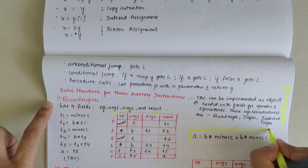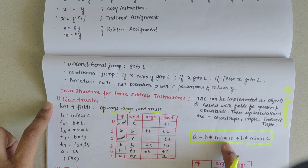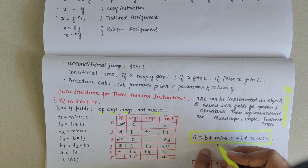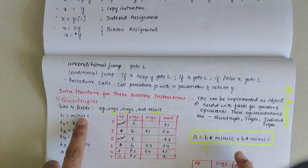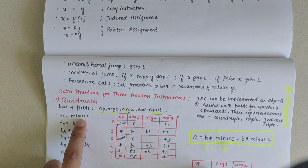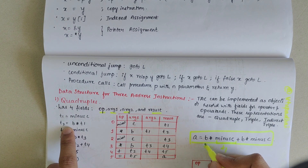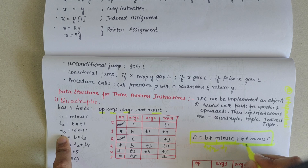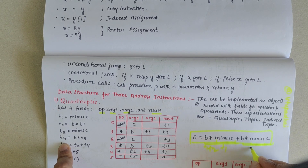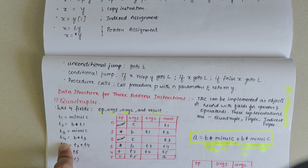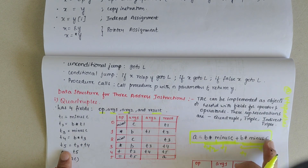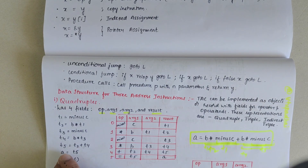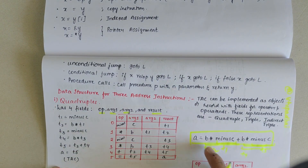Consider the expression a equals b star minus c plus b star minus c. Writing the three address code: t1 equals minus c; t2 equals b star t1; t3 equals minus c again; t4 equals b star t3; t5 equals t2 plus t4; and a equals t5. This is the three address code for the given expression.